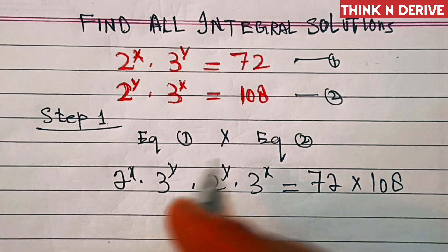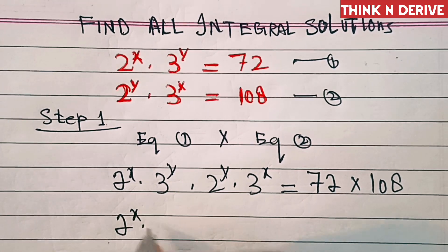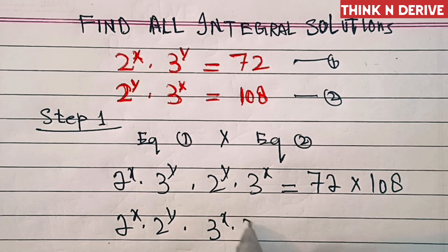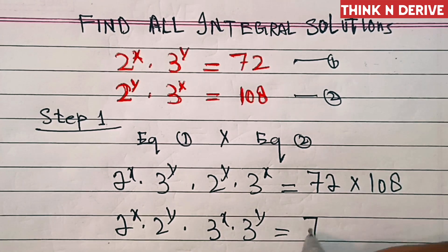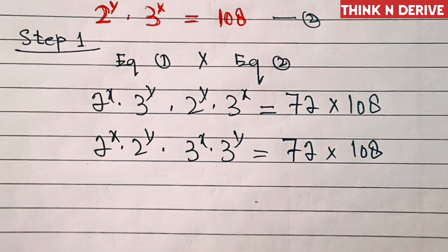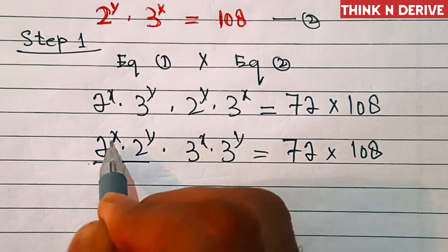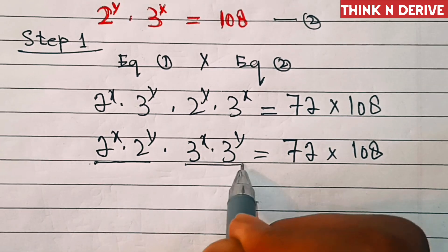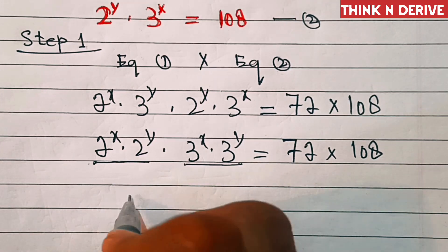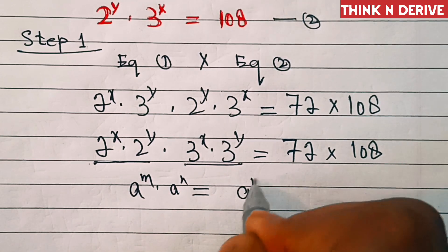Now we will rearrange the left hand side. This can be written as 2 power x into 2 power y, into 3 power x into 3 power y, equal to 72 into 108. We have same bases with different exponents, so we apply the formula: a power m into a power n is equal to a power m plus n.